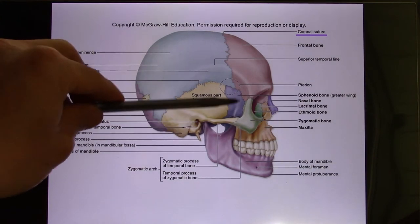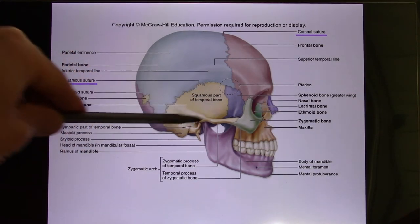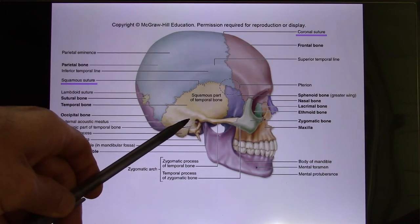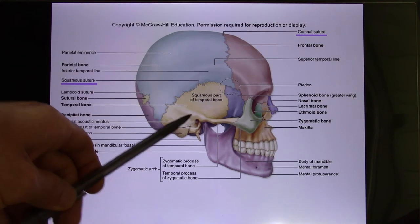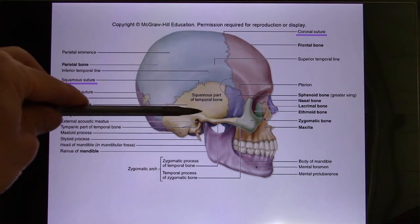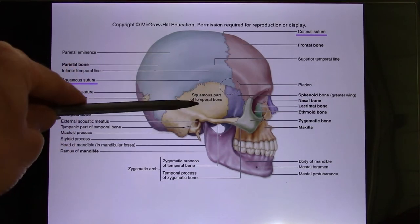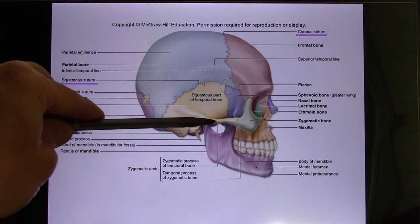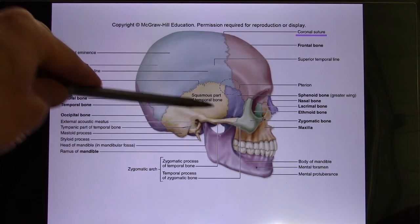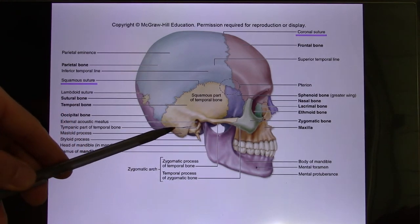The temporal bone connects with the parietal, occipital, and sphenoid bones. This is also where your ear is located — the ear canal is called the external acoustic meatus. The temporal bone has three important processes: the zygomatic process, which connects to the zygomatic bone; the styloid process; and the mastoid process.